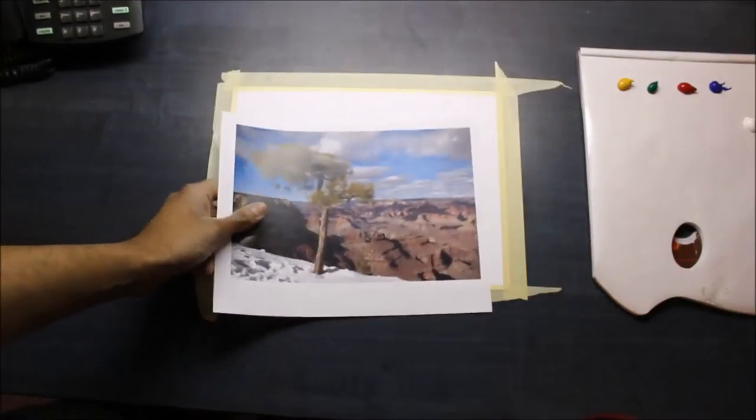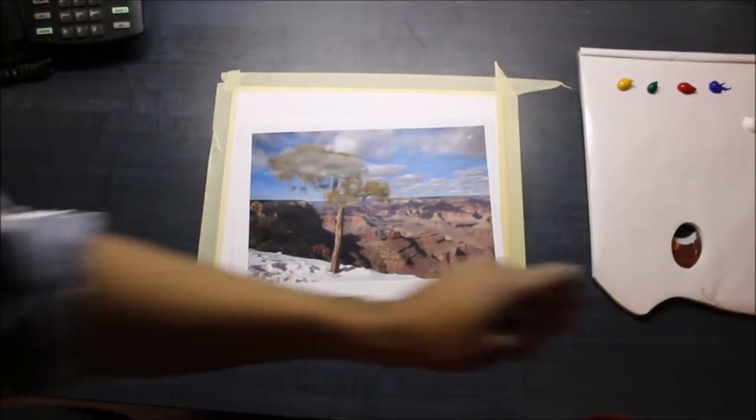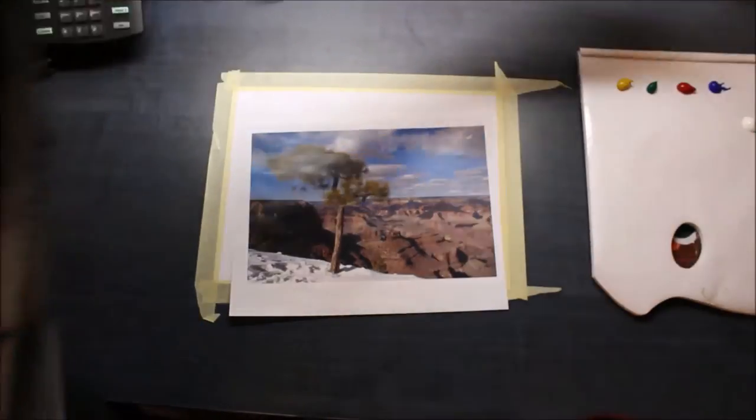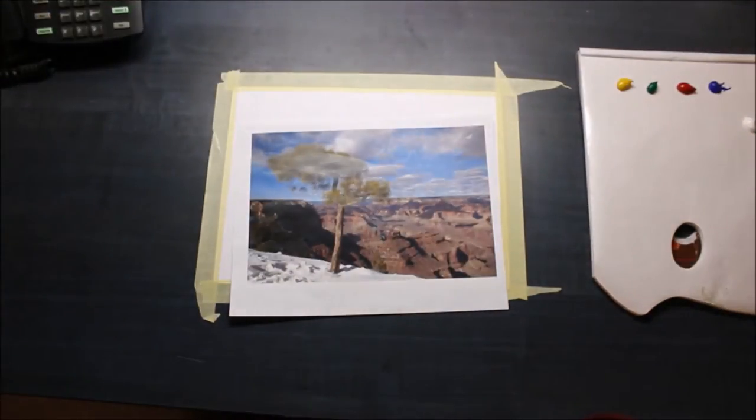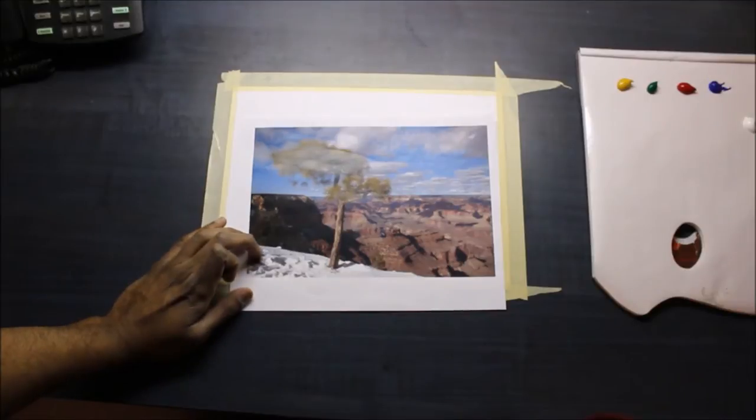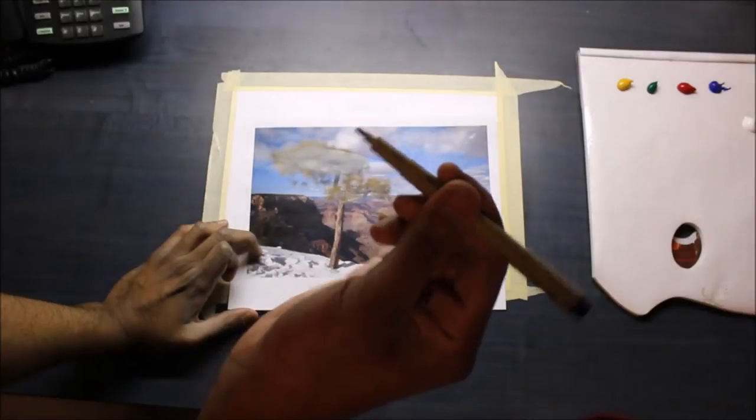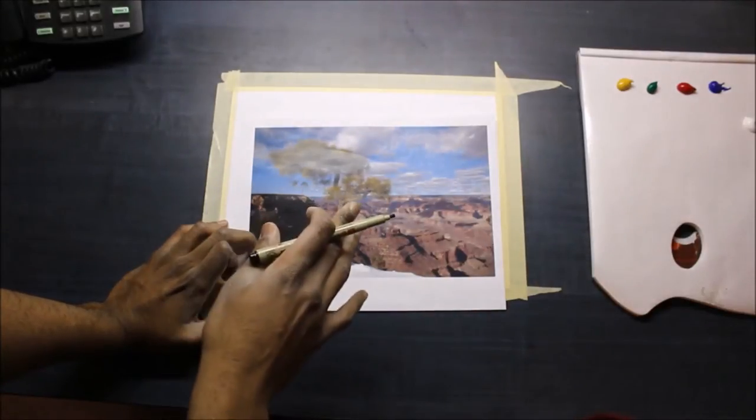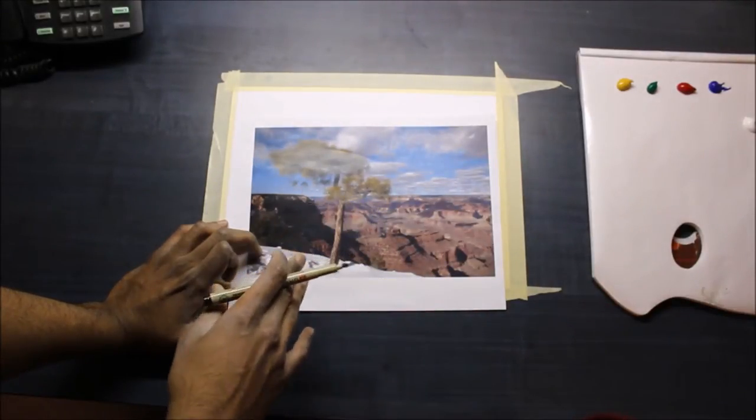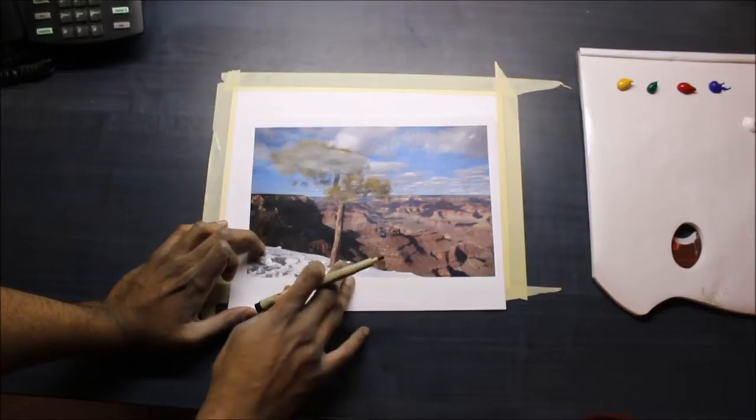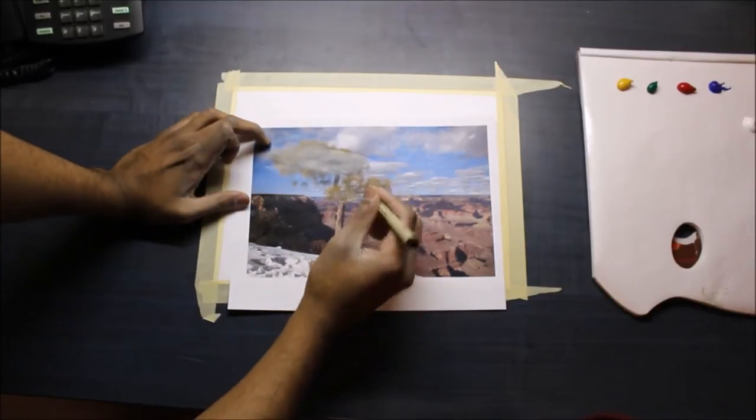So as I showed you earlier, the Group of Seven emphasizes the lights and the darks and the shapes. One thing that you can do is with a dark marker outline where all the highlights are to separate them from the shadows. So I'll just do that really quick.